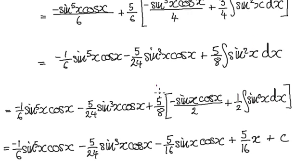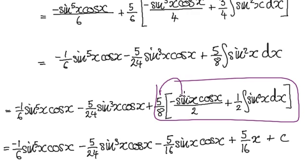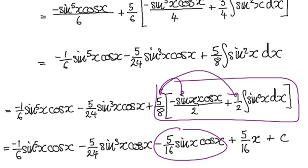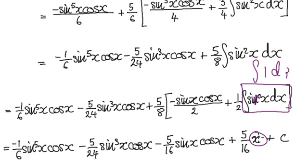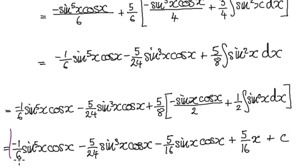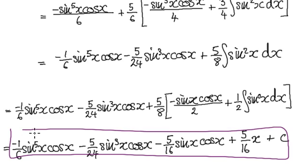So when you come to tidy this up — this times this gives you this, this times this would be 5 times 1, which is 5, and 8 times 2, which gives you this. And when you come to evaluate this: since that is 1, when you integrate 1 dx it will be x, and then plus your constant. So your final answer is this.